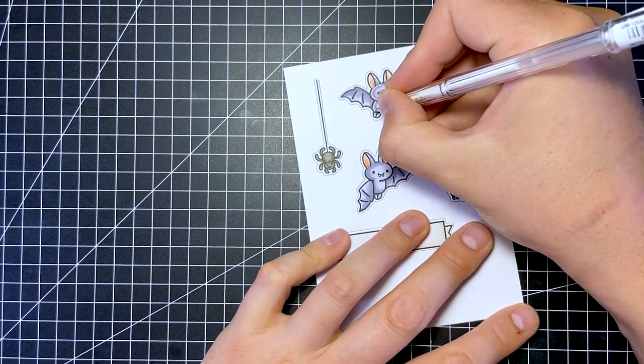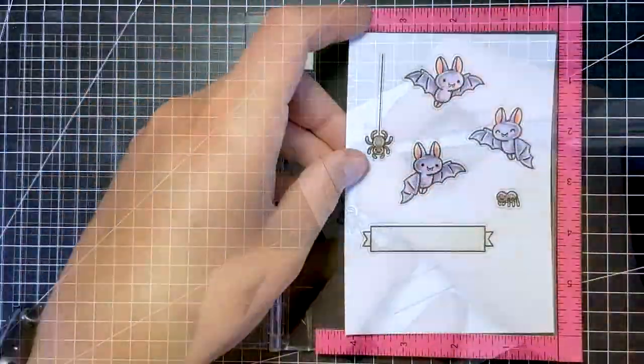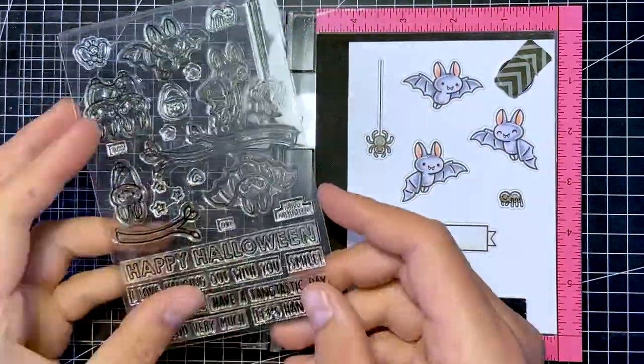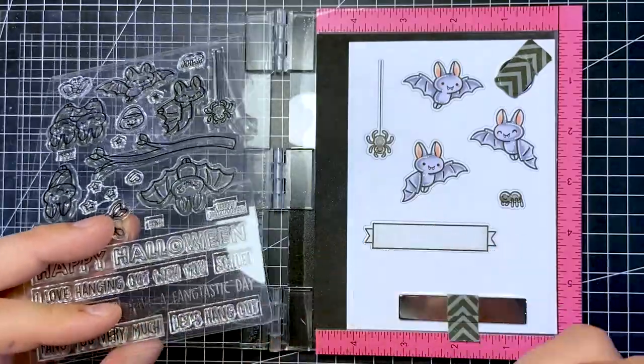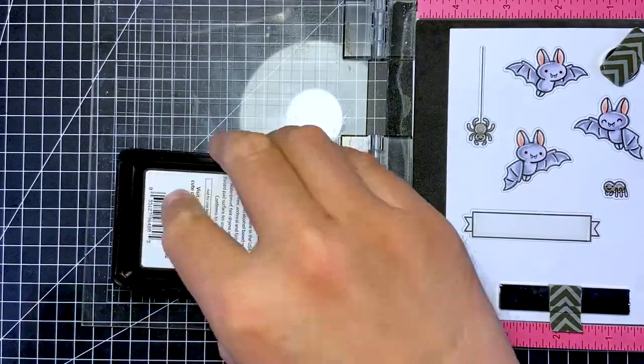As you might have noticed, I already die-cut the images and placed them back in the paper with some tape on the back for easy coloring. Before I peel them off the tape, I first bring it over to my Misti so I can stamp the sentiment in the banner. The sentiment can be found in the Fantastic Friends set and fits the banner perfectly.